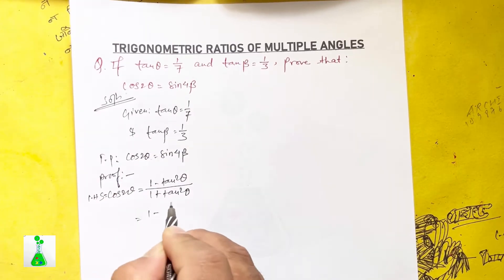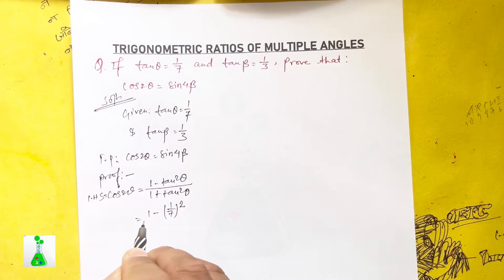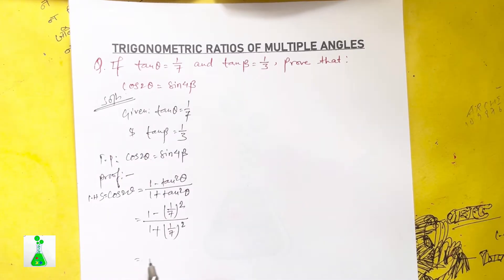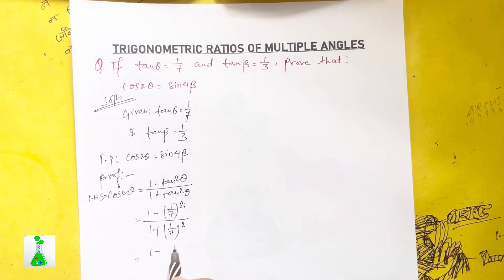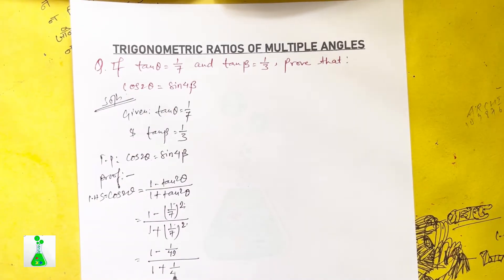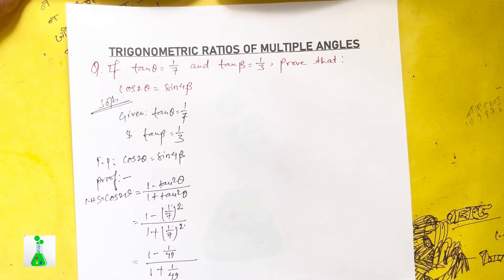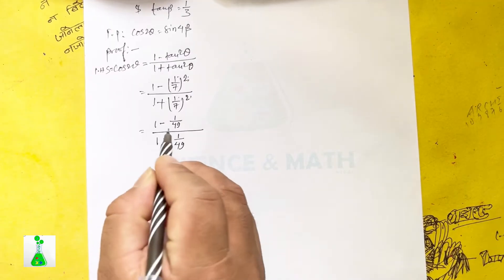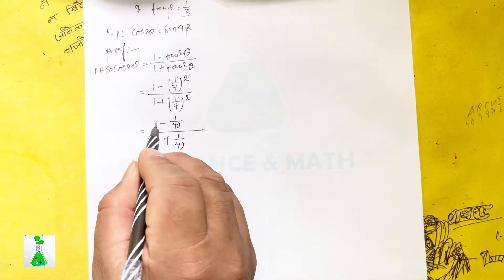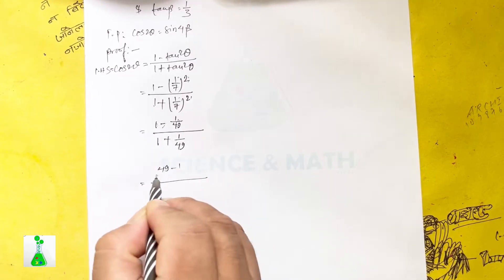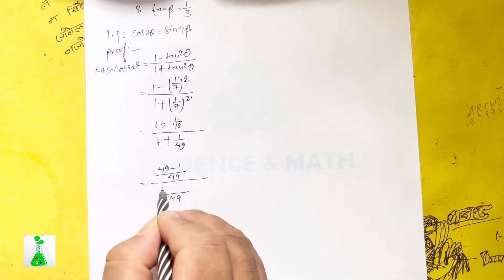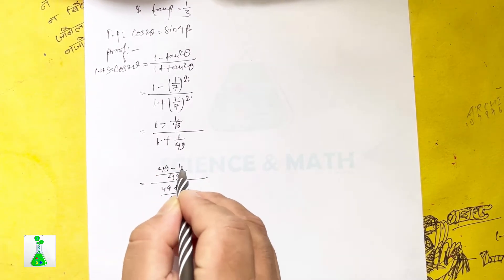Substituting tan theta equals 1 by 7: cos 2 theta equals 1 minus (1 by 7) squared divided by 1 plus (1 by 7) squared. That gives 1 minus 1 by 49 divided by 1 plus 1 by 49, which is 49 minus 1 over 49 divided by 49 plus 1 over 49.